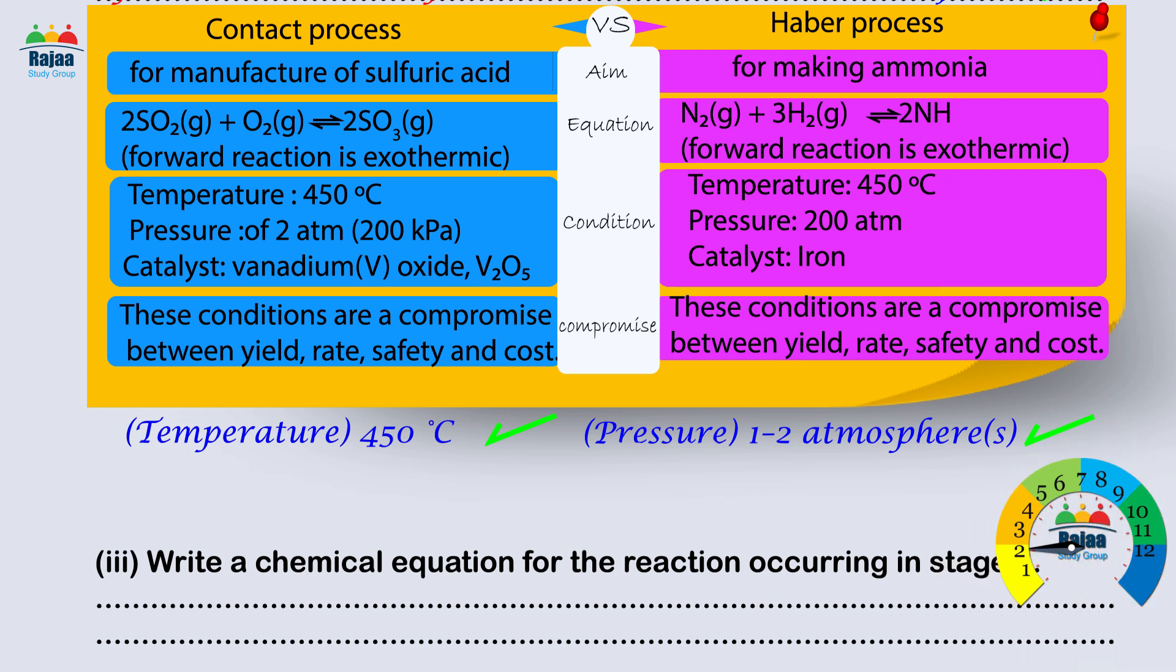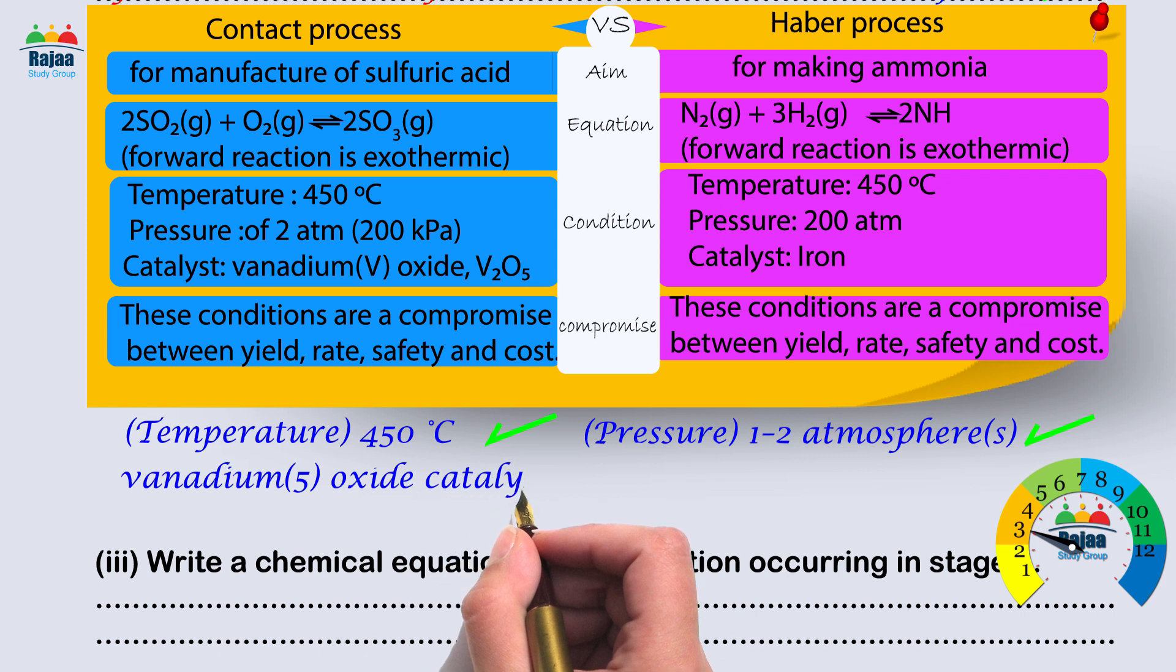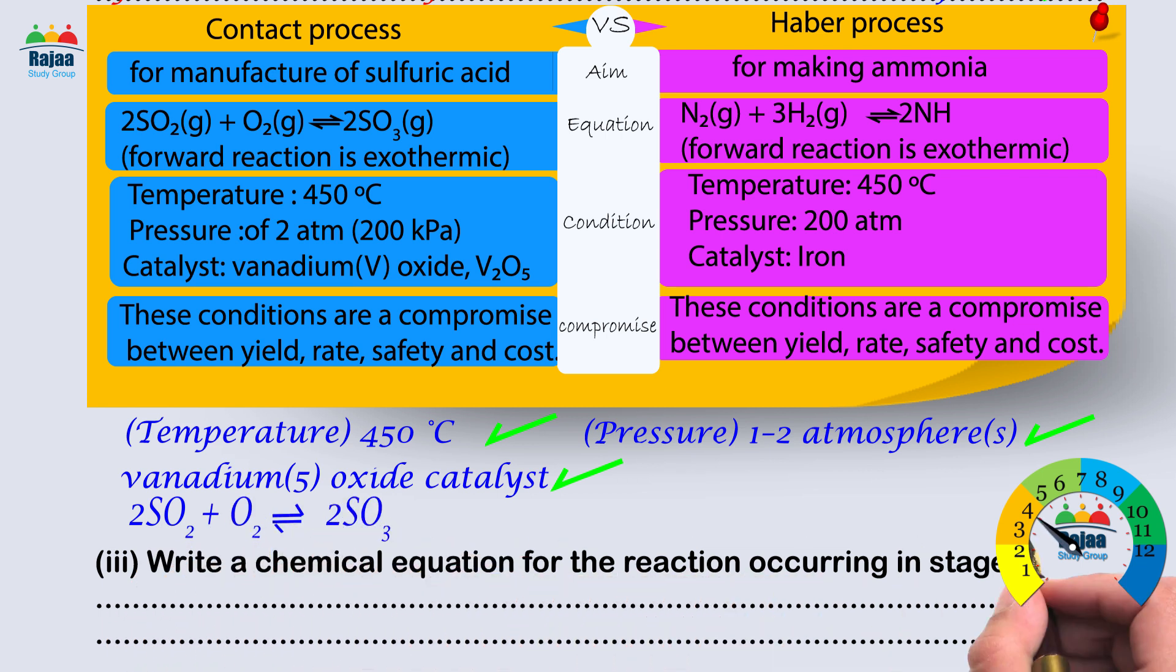Pressure: one to two atmospheres - one. Score: one mark. Vanadium V oxide catalyst - one. Score: one mark. 2SO2 + O2 → 2SO3 - one. Score: one mark.